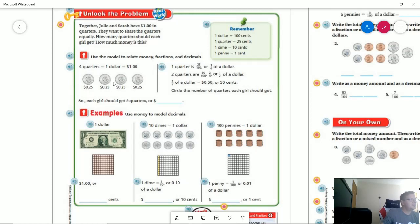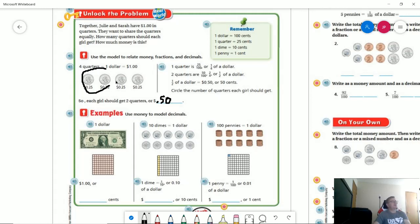So if they each get two quarters, we would add 25 cents plus 25 cents and that should give us 50 cents, which would be 0.50. And so we can see that over here. And they wanted us to circle the amount of quarters. So this would be person one. This would be person two.